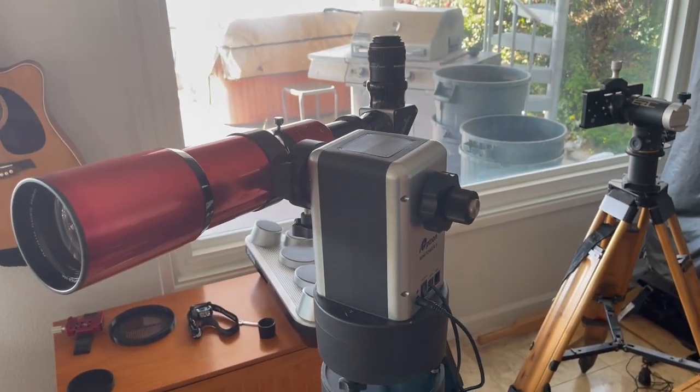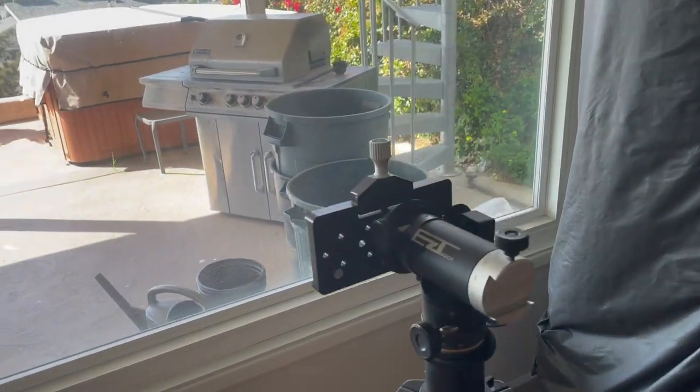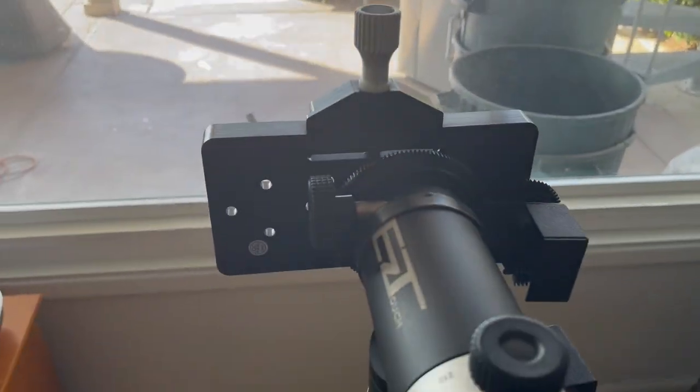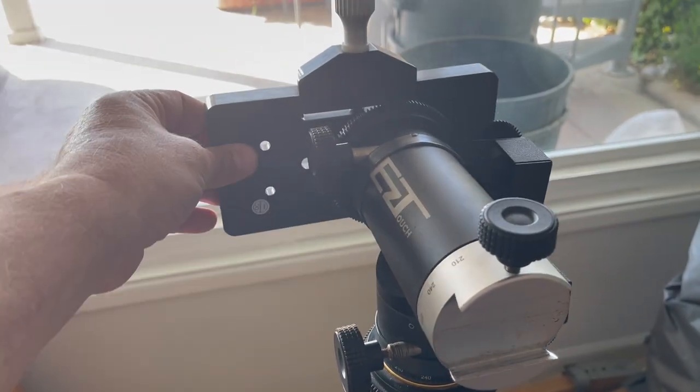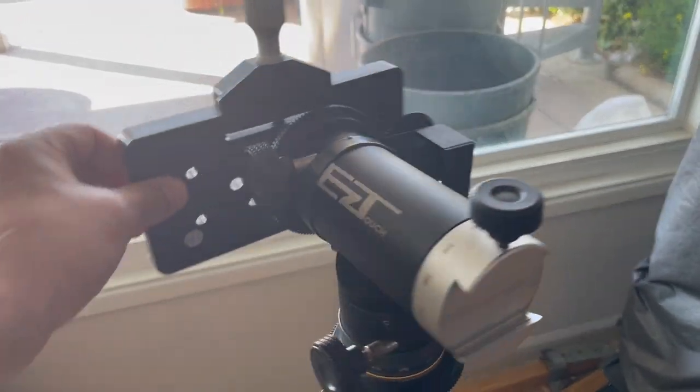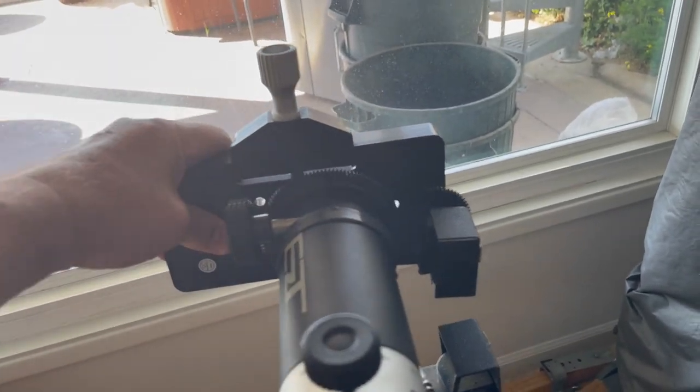These mount types are called altitude azimuth mounts, meaning they've got two axes. Rather than be aligned with the celestial north pole, they are aligned for azimuth (flat ground) and altitude (up and down).